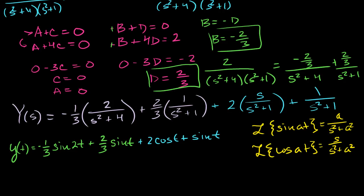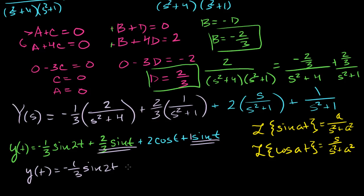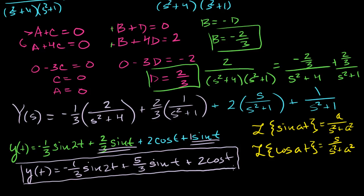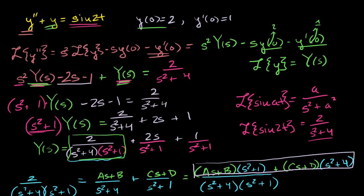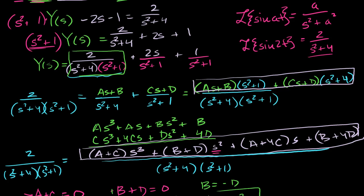We're almost done — just a little simplification. I have 2/3 times sine of t and another 1 times sine of t, which adds up to 5/3 sine of t. So y(t) = −1/3 sine of 2t + 5/3 sine of t + 2 cosine of t. This was a hairy problem, but the hardest part was the partial fraction decomposition. At the end, we got a clean answer satisfying this non-homogeneous differential equation with the boundary conditions incorporated.